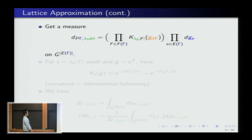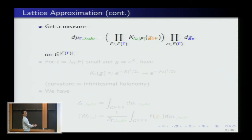I want to define a measure on the space of fields, which is a copy of G for every edge variable. The discretized measure on the lattice Γ with edges E depends on the lattice and area form, which I write as a coupling constant λ₀ times a fixed reference area form. The measure is the product of Haar measures for each group variable indexed by edges, weighted by a heat kernel for each face. λ₀ is the coupling constant; the theory depends on this combination, but I keep λ₀ explicit so the coupling constant is manifest.